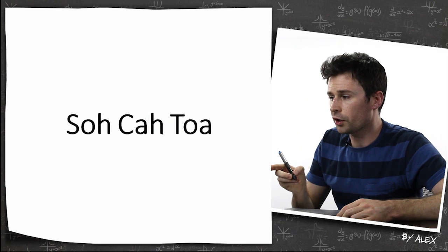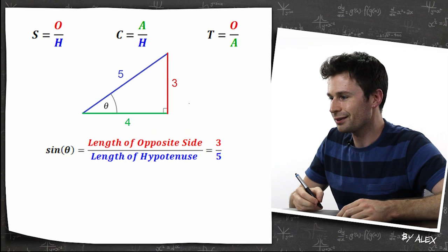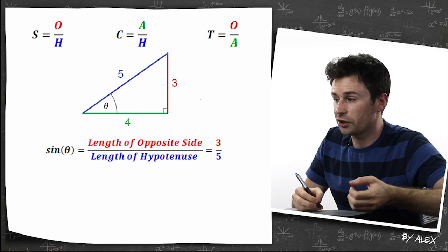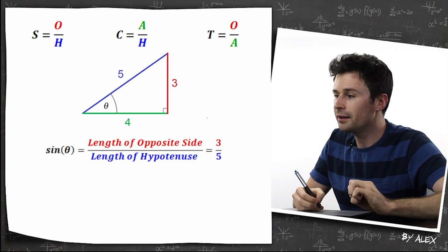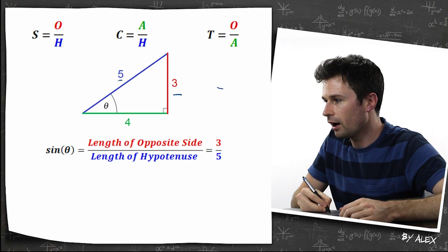If you look at SOHCAHTOA, you probably remember what all these mean, but we'll go over it very briefly. Sine theta is SOH, which is the length of the opposite side divided by the length of the hypotenuse. So in this case, that's just three divided by five.